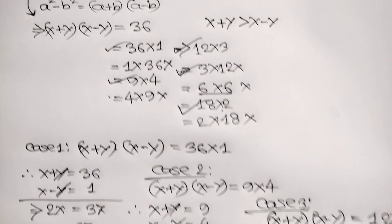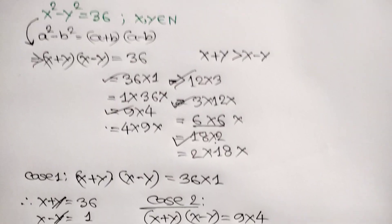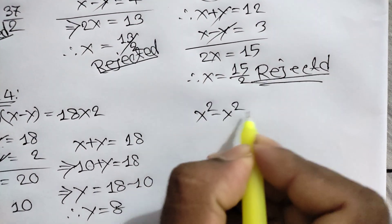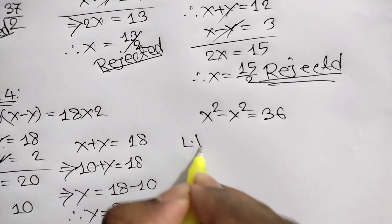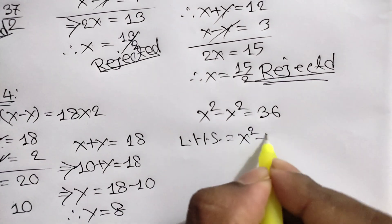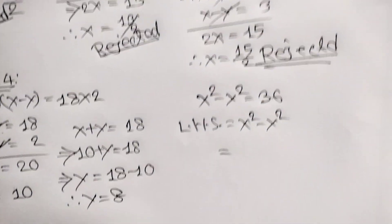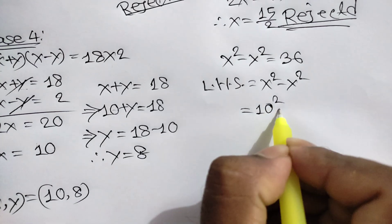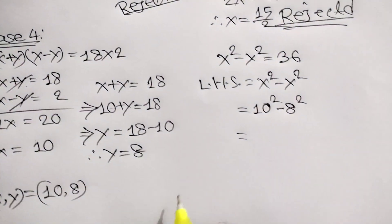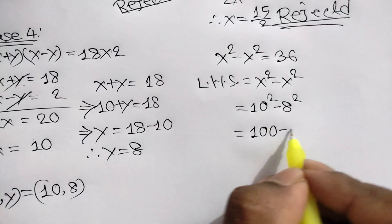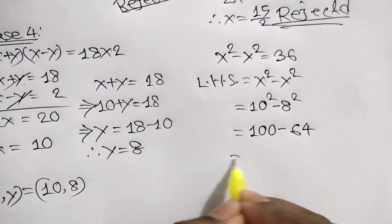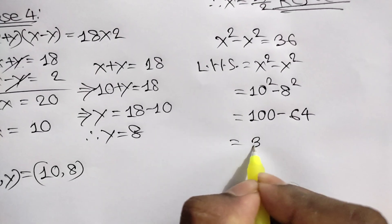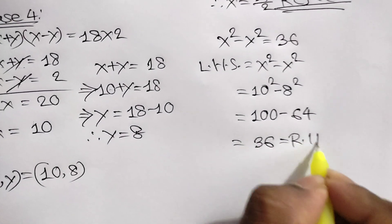Let's verify: our equation is x squared minus y squared is equal to 36. The left hand side is x squared minus y squared. With x equal to 10 and y equal to 8, we get 10 squared minus 8 squared, which is 100 minus 64, which equals 36. This matches the right hand side, confirming our solution.